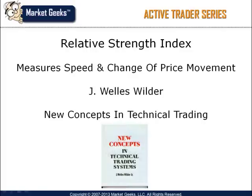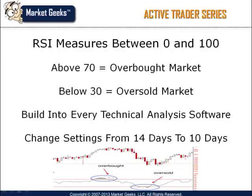Suffice to say, this indicator has withstood the test of time. The RSI oscillates between 0 and 100. Traditionally, the RSI is considered overbought when above 70 and oversold when below 30. The only thing that needs to be adjusted is the time period. Wilder traditionally used 14 days to calculate the RSI oscillator, while I prefer to use a shorter time period. I find that the 10-day, or 10 bars if you're day trading, works very well for short-term market swings.